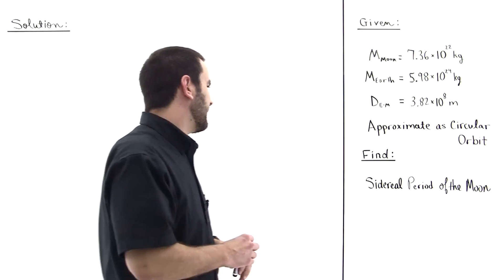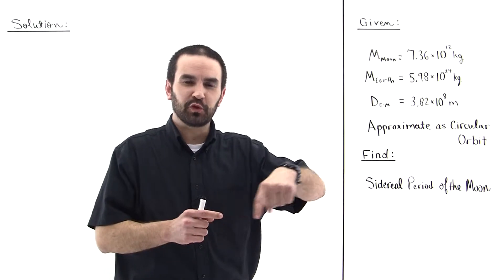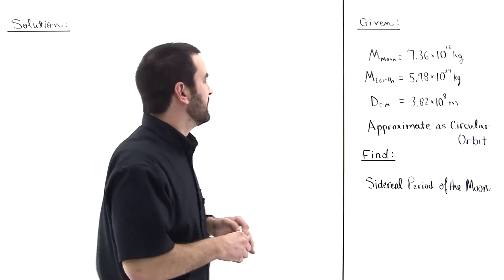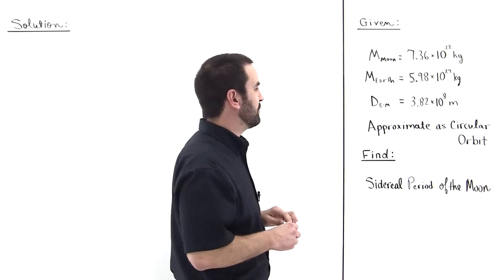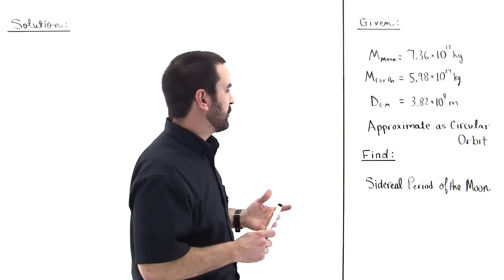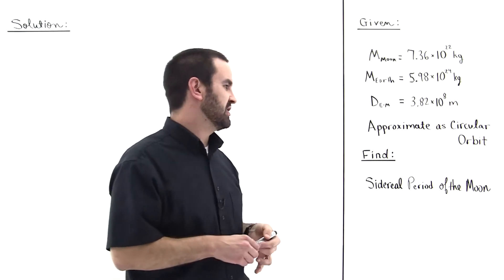We're given this data and we're asked to calculate the sidereal period of the moon, that is the time that it takes the moon to go around the earth one time. We're given the mass of the moon, the mass of the earth, the distance from the earth to the moon, and we're told to approximate the orbit as circular, which is not a terrible approximation.